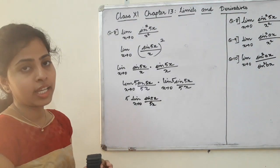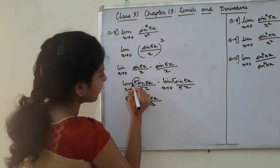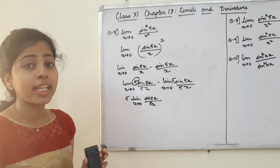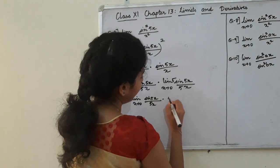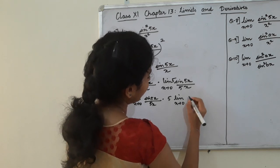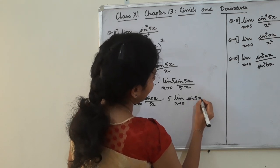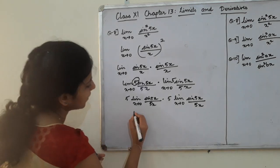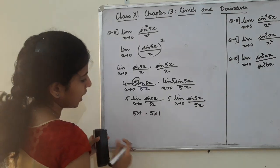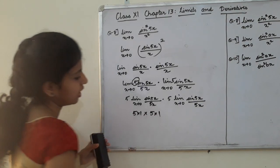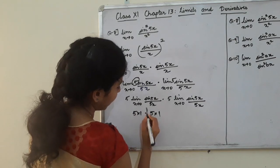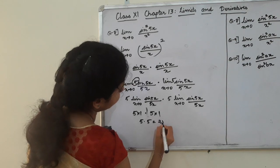The option we have to use in this function as well. We have to change 5 in the function because it is a constant. Limit is to change the value. So here we have to change 5. Limit x tending to 0, sin 5x divided by 5x. 5 into 1 into 5 into 1 now. 5 into 5 is equal to 25.